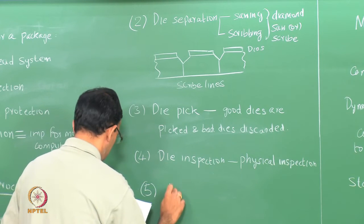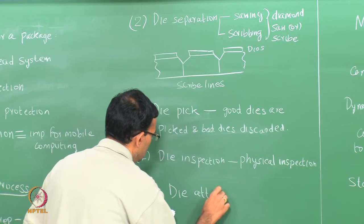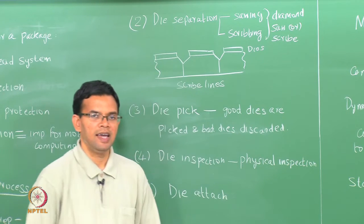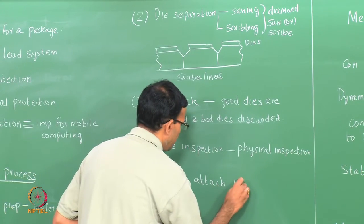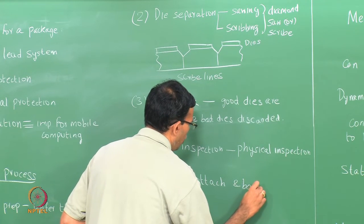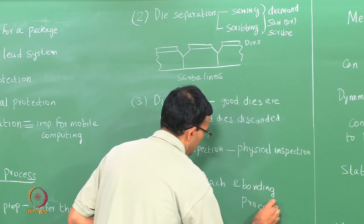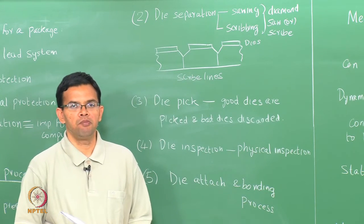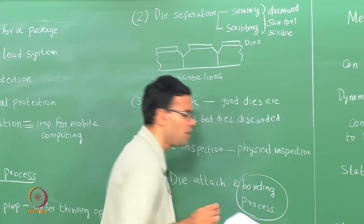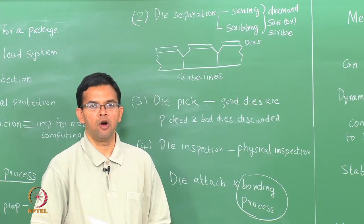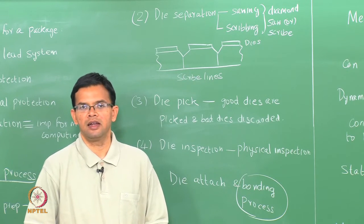The next process is the die attach process, because the die now has to be integrated along with your chip. So you have a die attach and then a bonding process. This is essentially the most important part of the packaging process — the bonding — where the die is bonded to the package and the leads are attached to make the electrical connections.